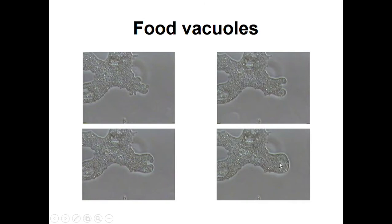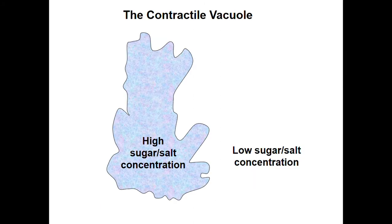After the food is enclosed, the cell will start secreting digestive enzymes into the food vacuole so that the food gets digested and the cell can use it whenever required. It's like a very primitive level of digestion.